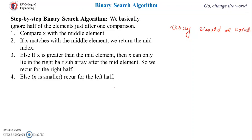Since the array is sorted, all the elements in the left half will be smaller than the middle element, and the elements in the right half will be greater than the middle element. If the item to be searched is less than the middle element, it is searched in the left half; otherwise, it is searched in the right half.